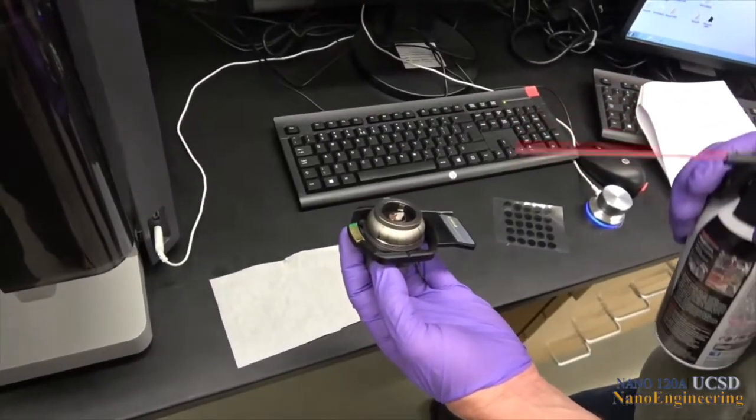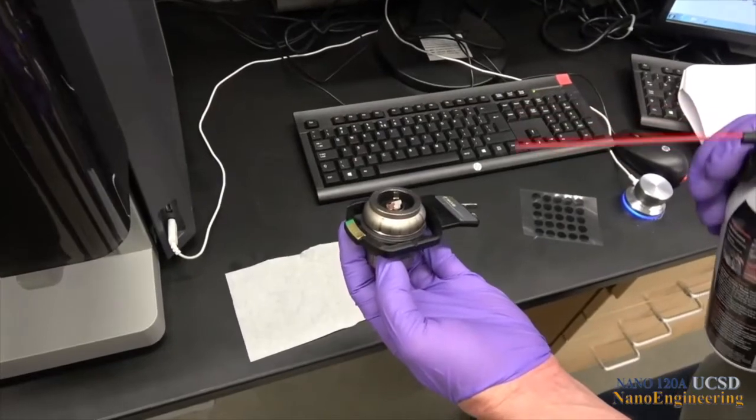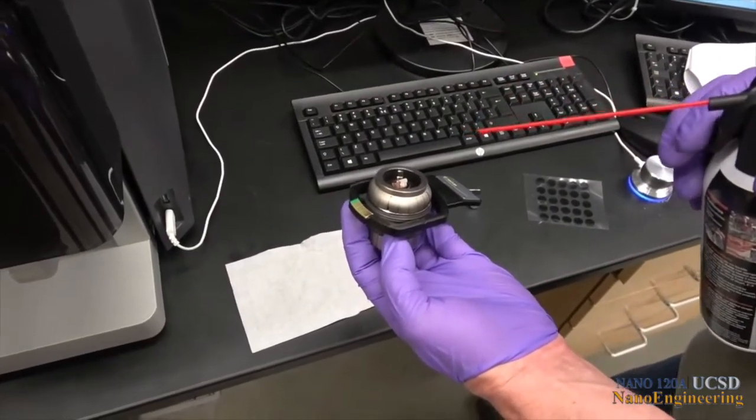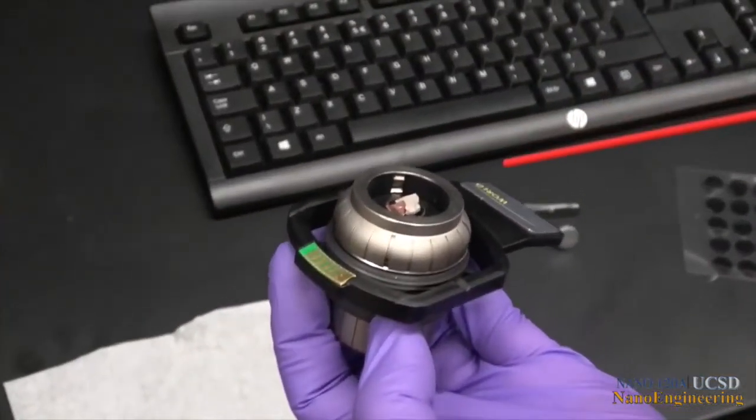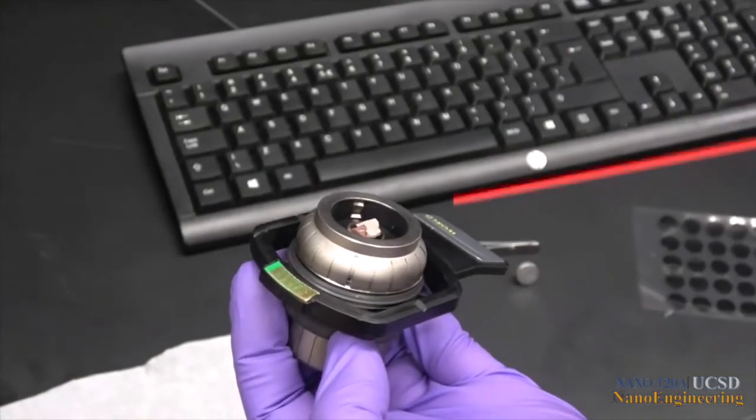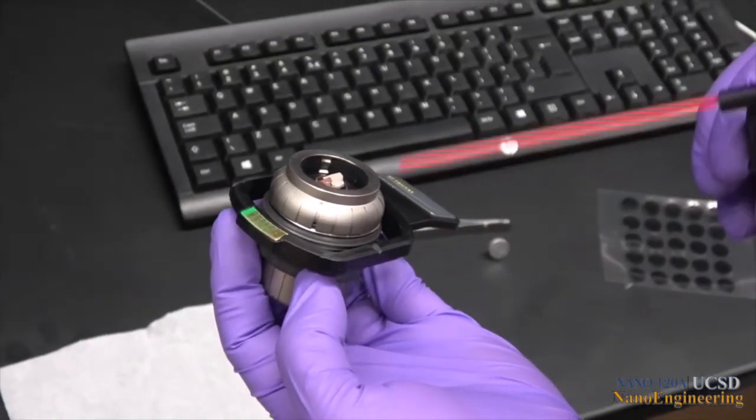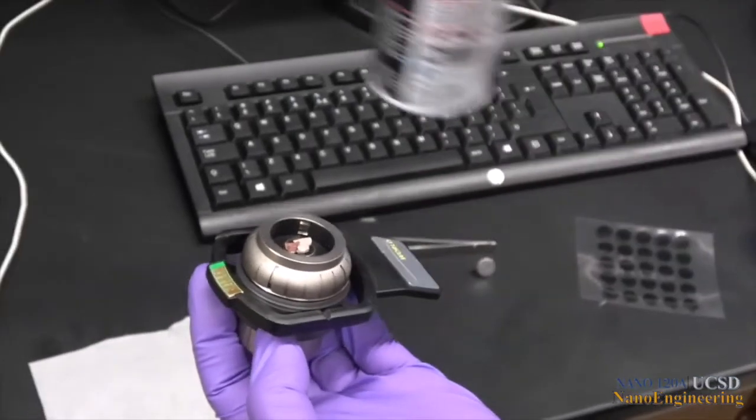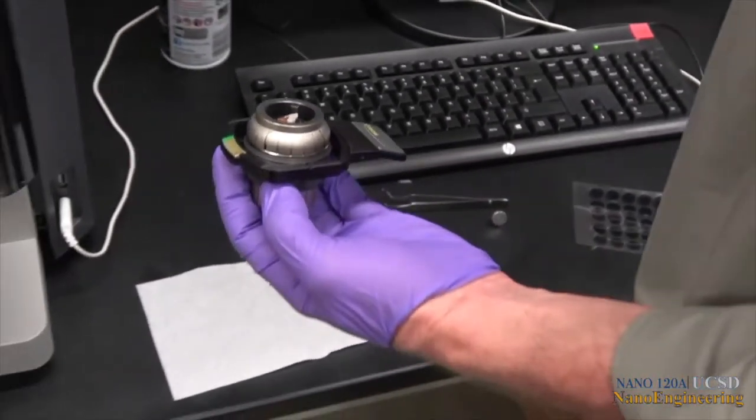Give the sample a light dust off to remove loose particles so they don't contaminate the chamber. This is especially important when examining powder specimens. Insert the sample holder into the slot shown until it stops, then shut the chamber door.